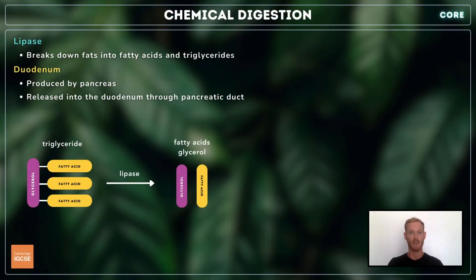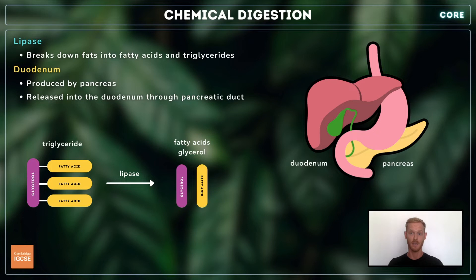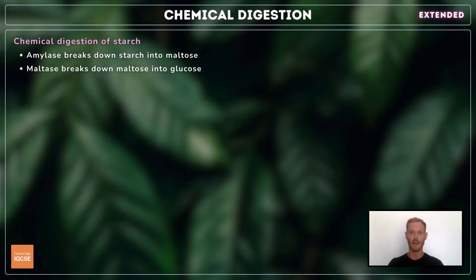Finally, lipase breaks down fat molecules called triglycerides into soluble fatty acids and glycerol. It's produced alongside the other enzymes in the pancreas, and does its work in the duodenum. That's everything for the core section, so we'll move on now to the extended content.